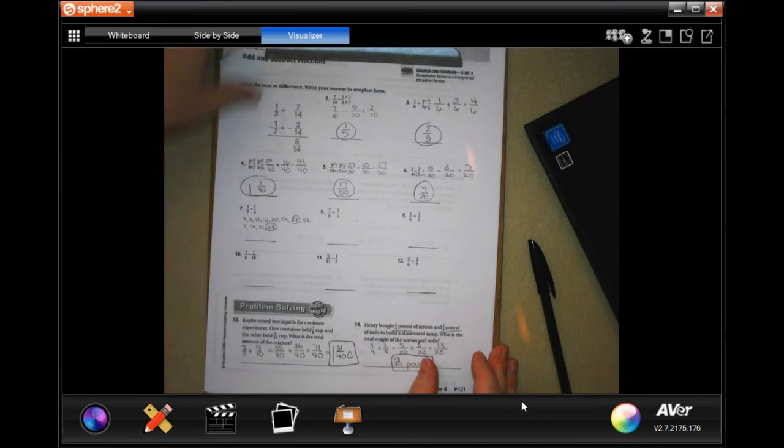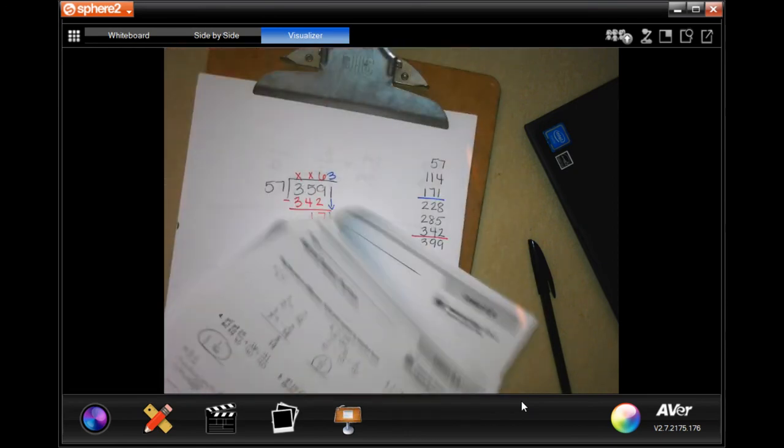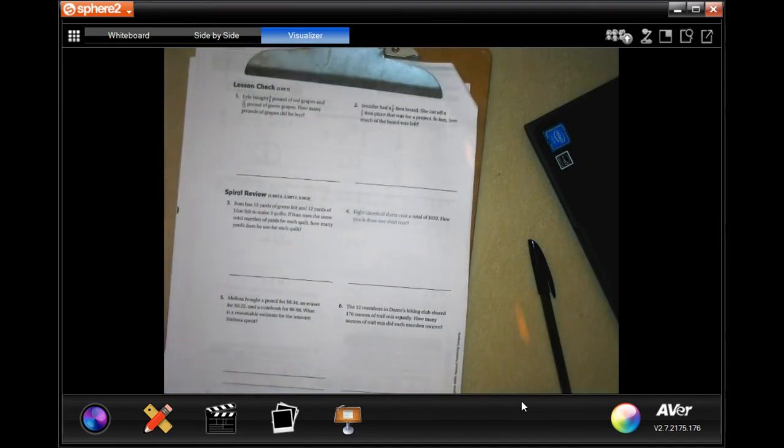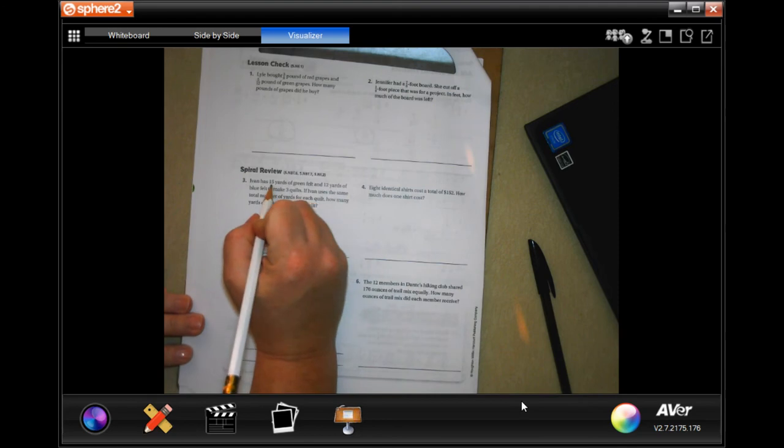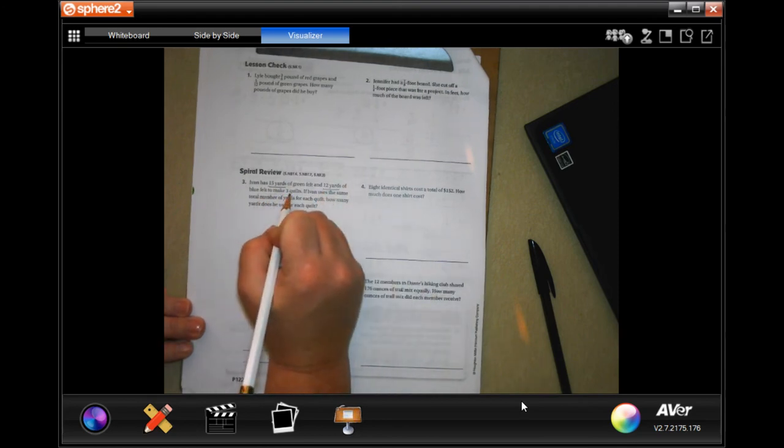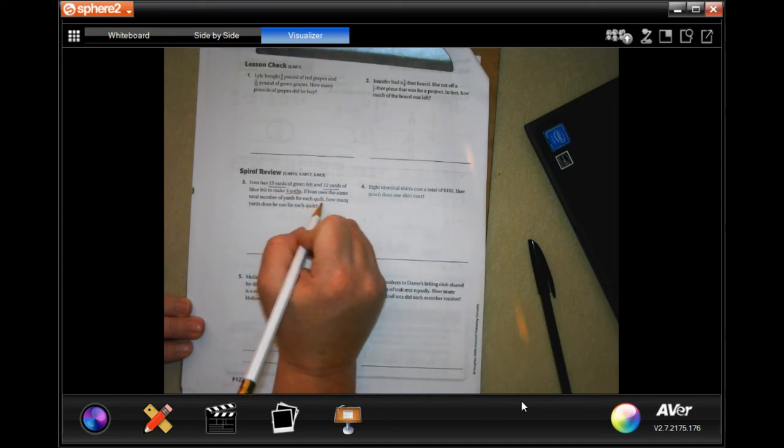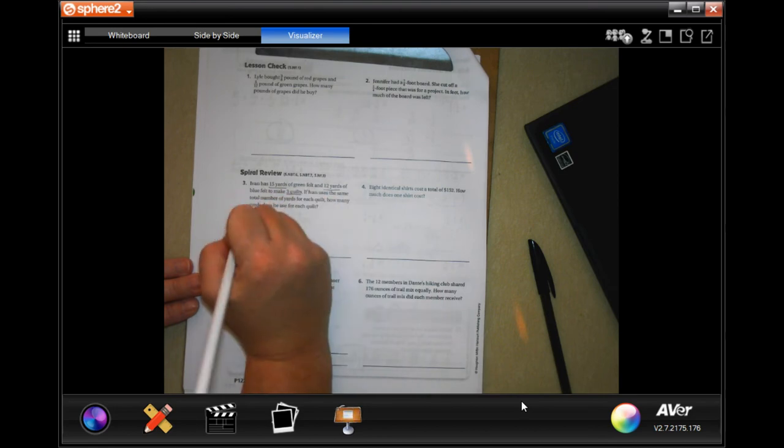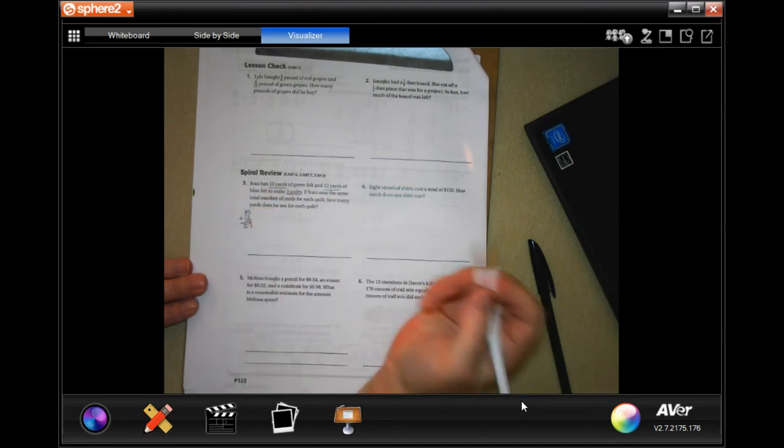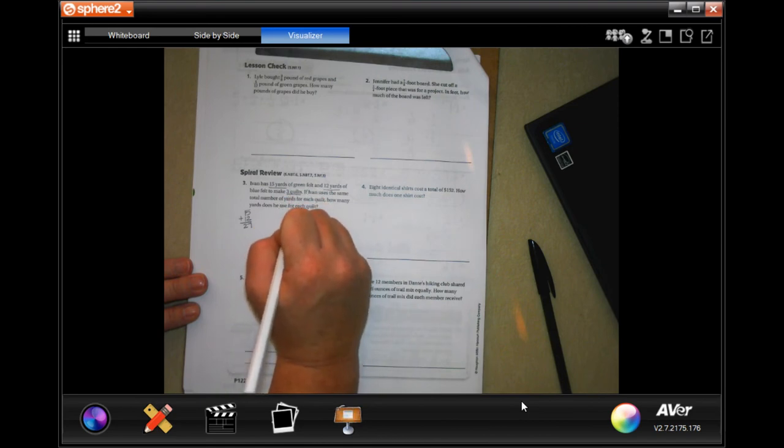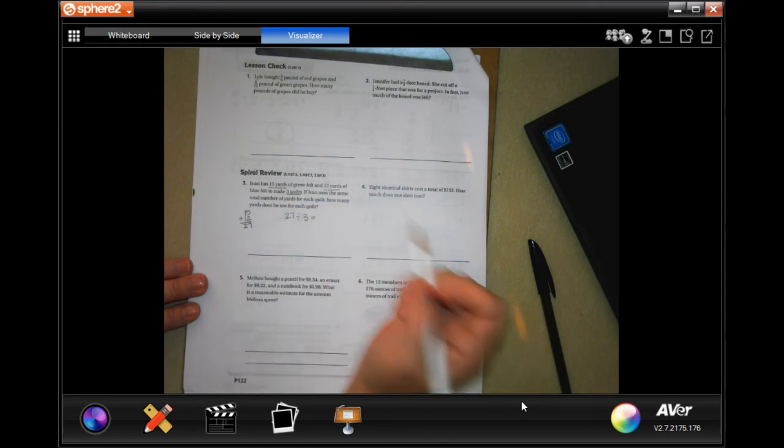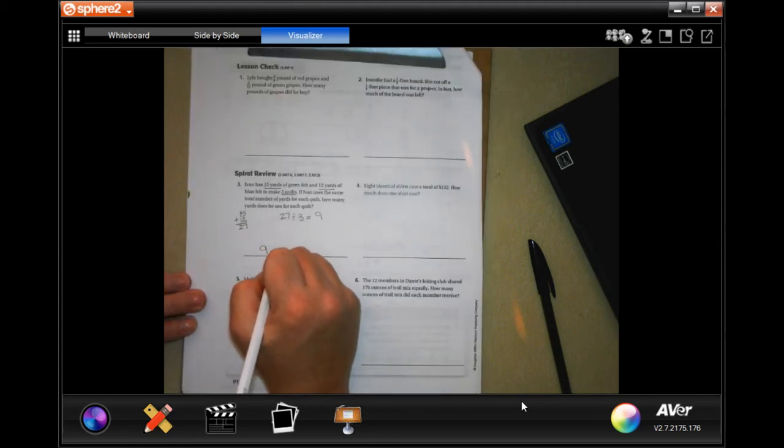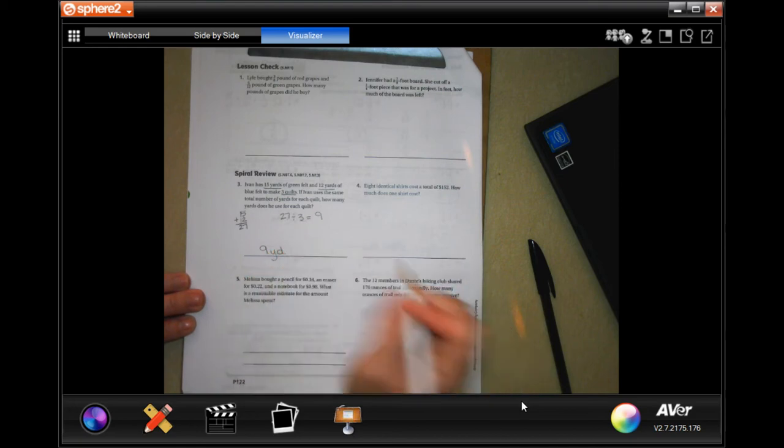All right, we're going to go on to the back. You guys are going to do a little lesson chat and we're going to just follow our review. Ivan has fifteen yards of green felt and twelve yards of blue felt to make three quilts. If Ivan uses the same number of yards for each quilt, how many yards does he use for each quilt? First we need to know how many yards he has: well, fifteen plus twelve is going to be twenty-seven. Then I have to take that twenty-seven and I have to divide it between the three quilts. Well I know that three times nine is twenty-seven, so nine yards.